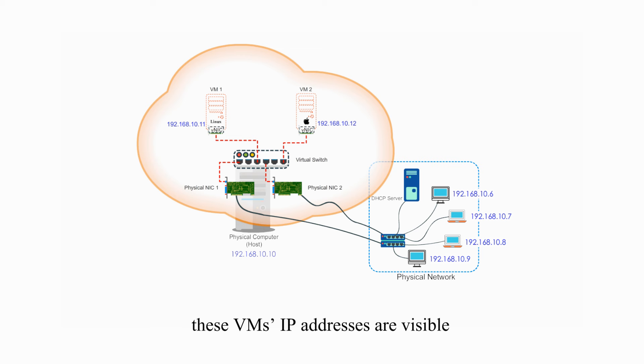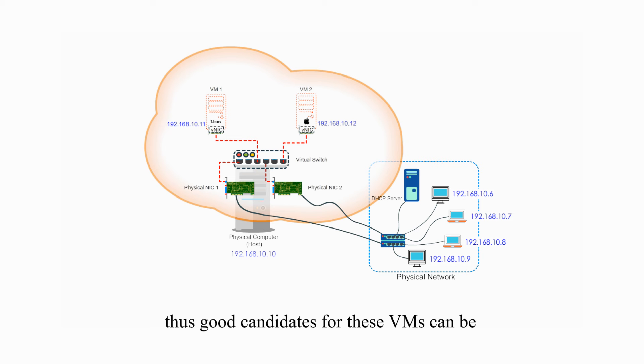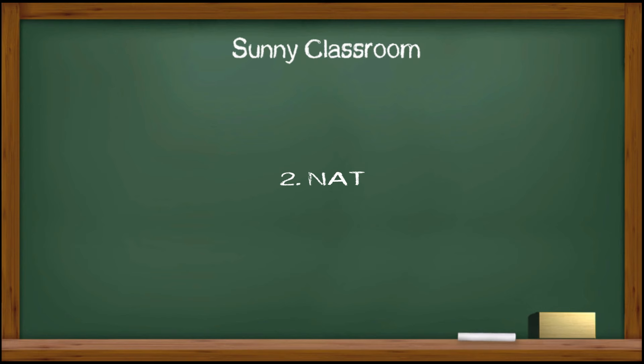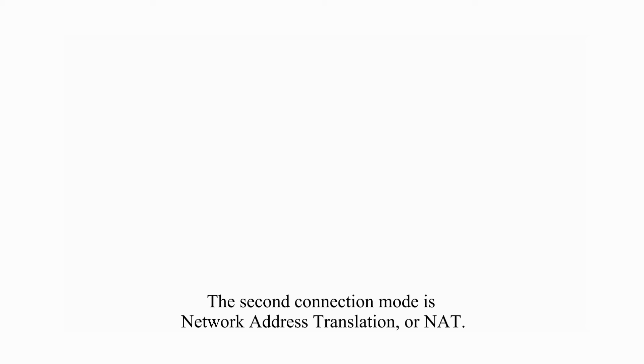In the bridged connection mode, these virtual machines' IP addresses are visible and directly accessible by other computers on the network. Thus, good candidates for these virtual machines can be a mail server, or file server, or web server.